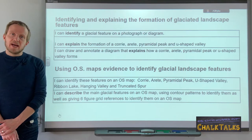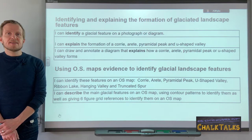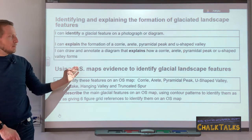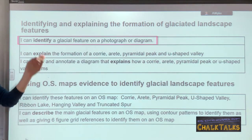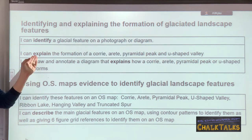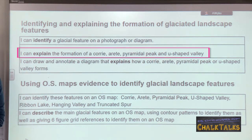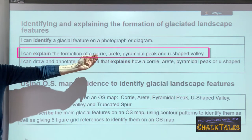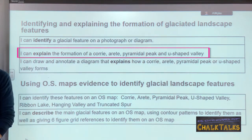Let's have a quick look at the learning outcomes that make up the glacial landscapes topic. They're grouped into two main areas. The first learning outcome is your ability to identify them using a photograph or a diagram that you might be provided in your exam paper. The second main learning outcome relates to your ability to explain the formation of one of the four features: the Corrie, the Arete, the Pyramid Peak, and the U-shaped valley.